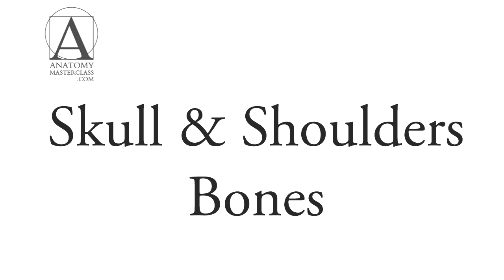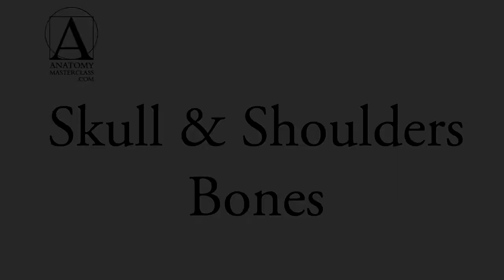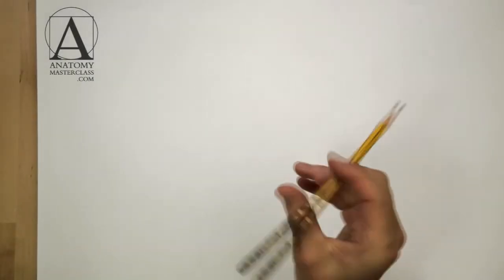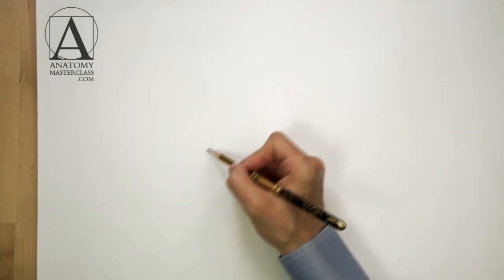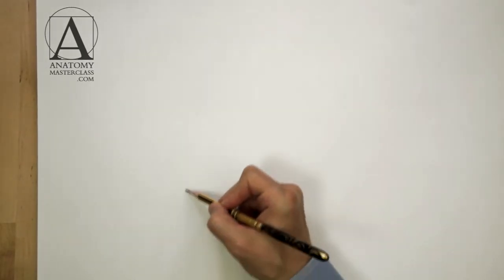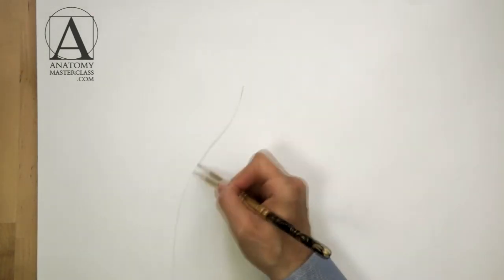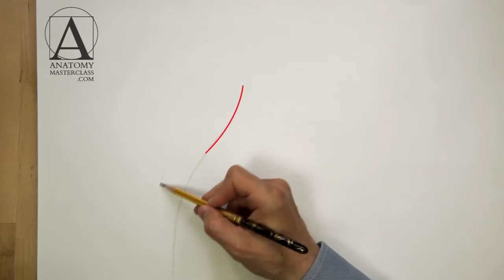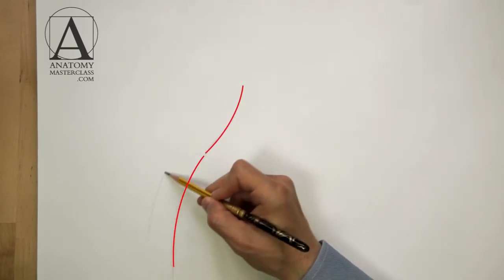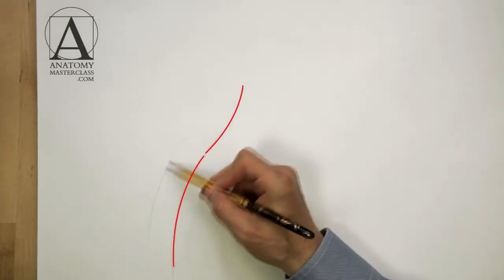The skull and shoulder bones. Let's begin with the skeletal anatomy. The spinal column has two distinct curves: the curve of the neck region and the curve of the ribcage region. They are arched in opposite directions.